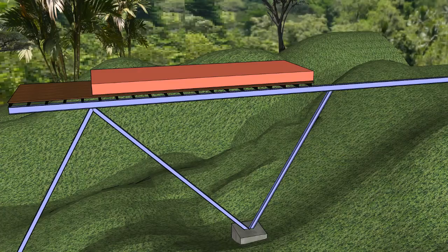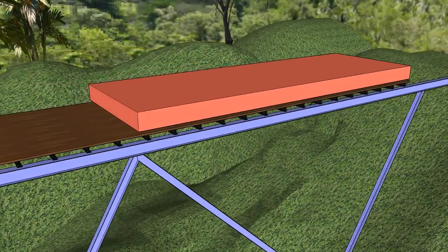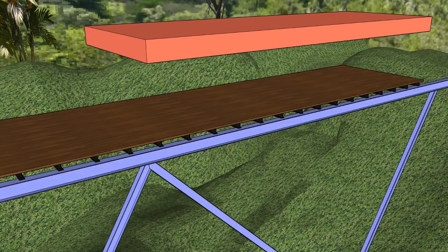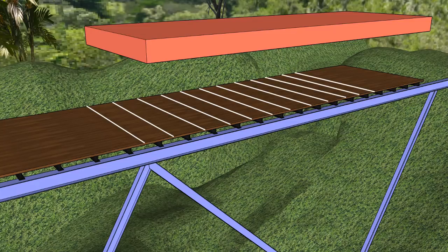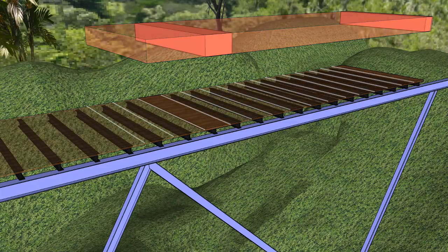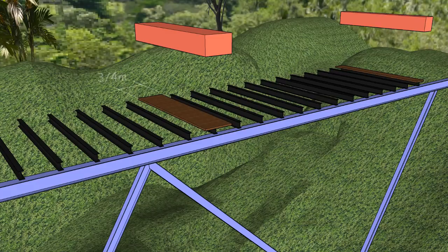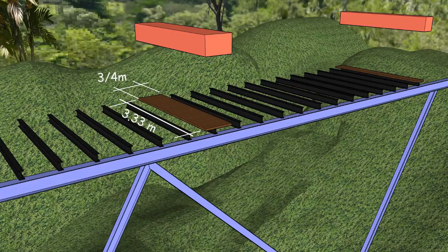Since the floor is resting on a series of short beams, we need to distribute the live load among the beams. This is done, again, based on the tributary area associated with each beam. Each beam, except for the one at the far end, has a tributary area equal to three-fourths of a meter by 3.33 meters. The tributary area for the far end beam is half as wide as the other ones, so that area equals three-eighths of a meter by 3.33 meters.